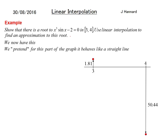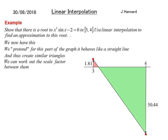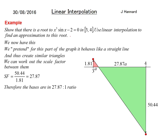At 3 the function went up to 1.81, and at 4 it went all the way down to -50.44. We pretend this part of the graph behaves like a straight line, so we join them up and create similar triangles - a green triangle and a pink triangle. Using scale factor ideas, we divide 50.44 by 1.81, which is about 27.87. The bases are in a 27.87 to 1 ratio, giving 27.87a and a.